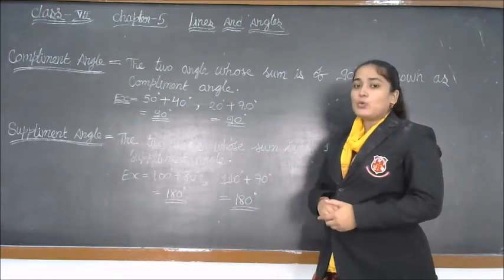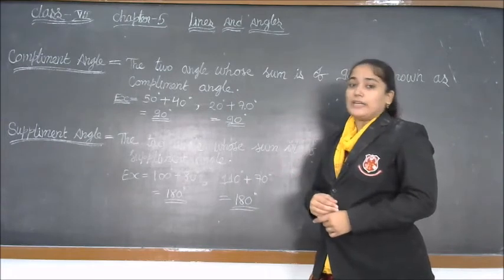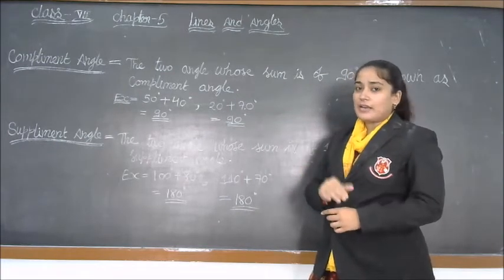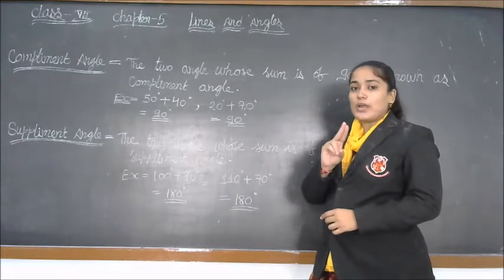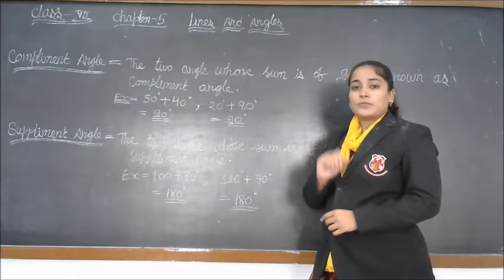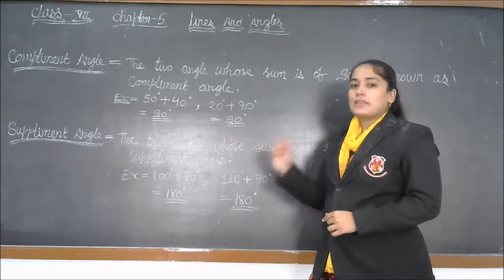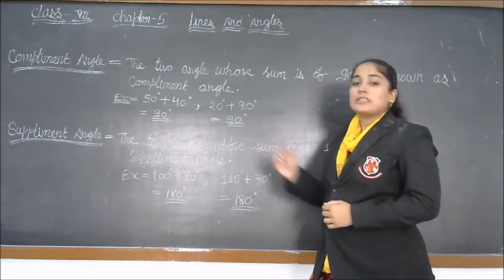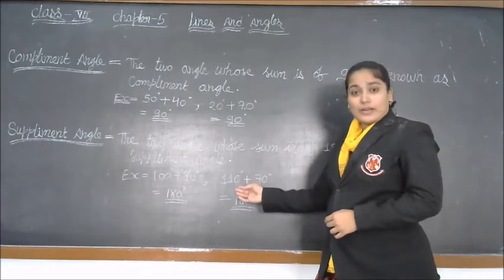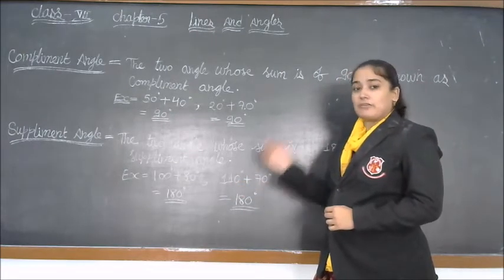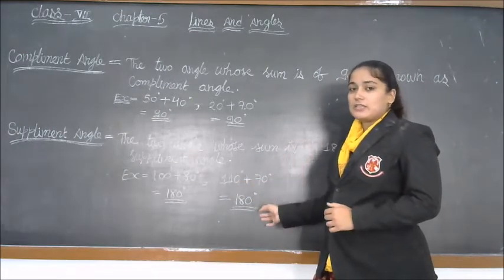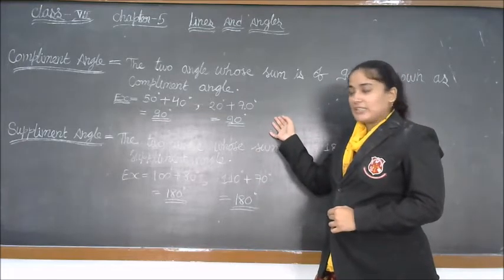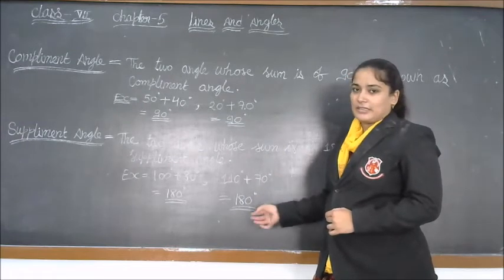Supplementary angle: the two angles whose sum is 180°. For example, 100° and 80° add up to 180°, so they form a supplementary pair. Any two angles whose sum is 180° are known as supplementary angles. For example, 110° plus 70° equals 180°. So, complementary angles sum to 90° and supplementary angles sum to 180°.